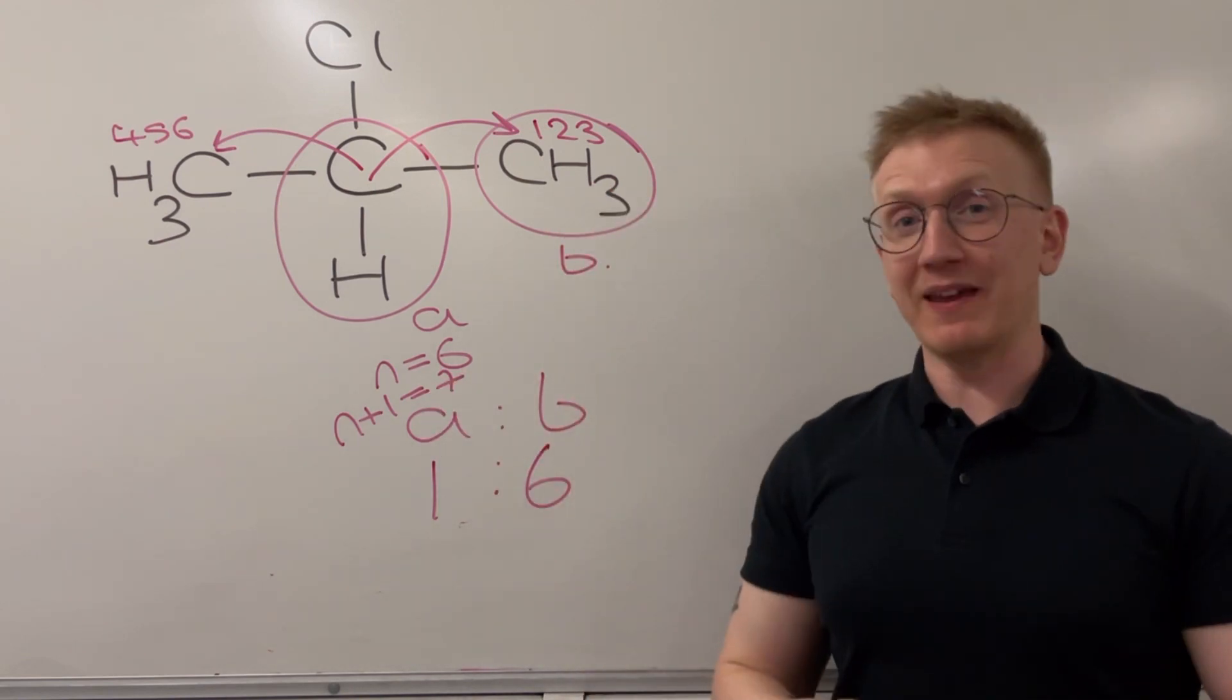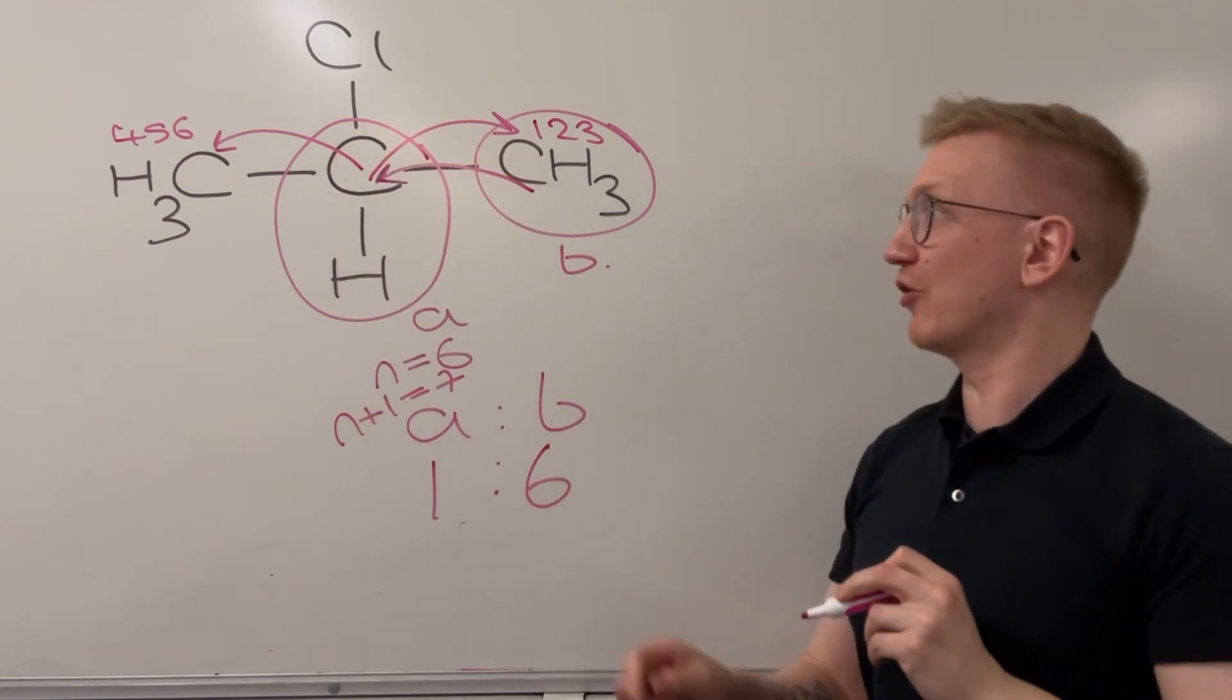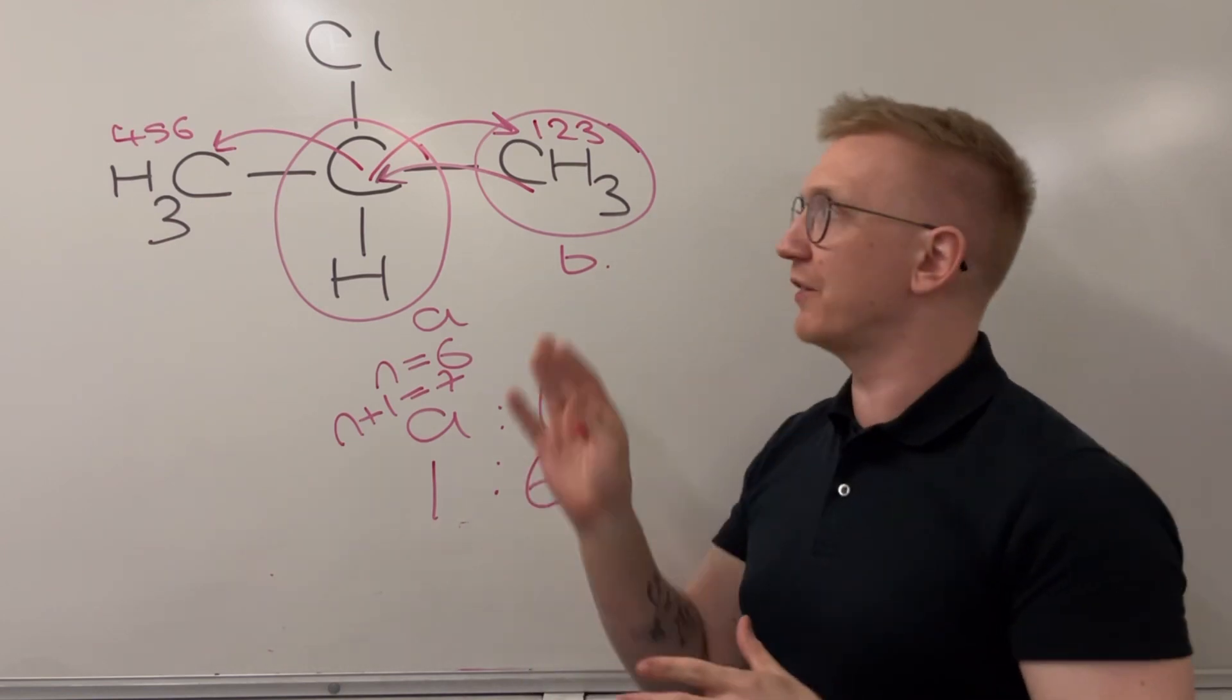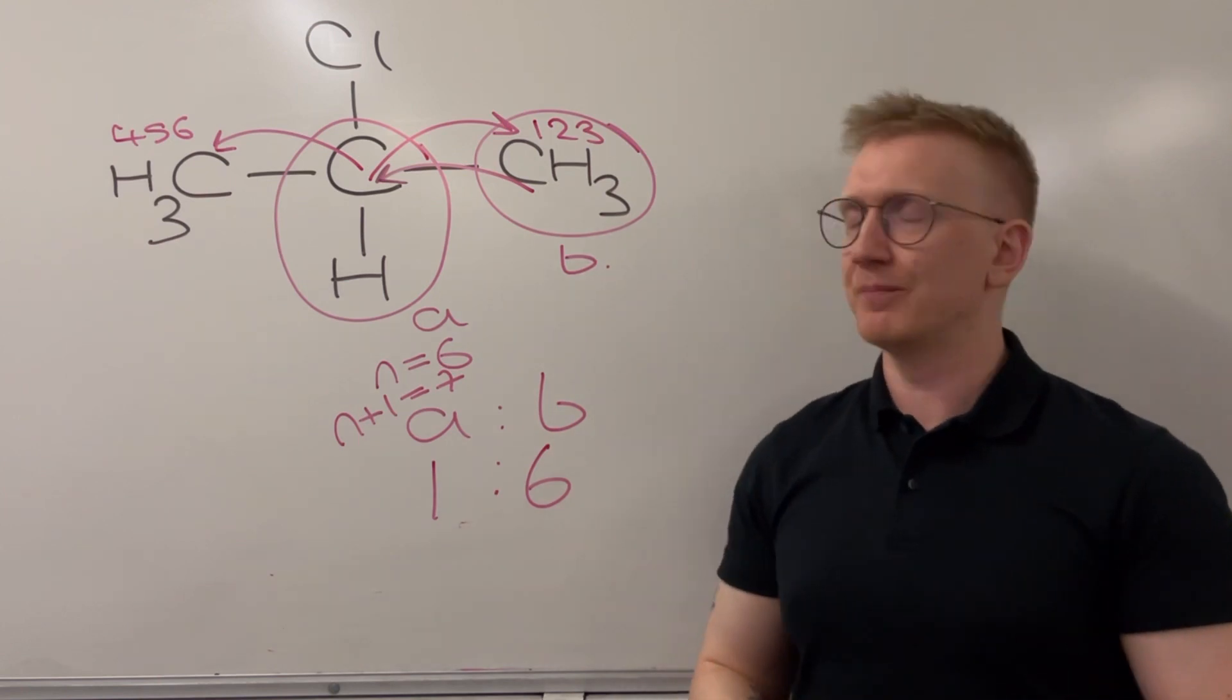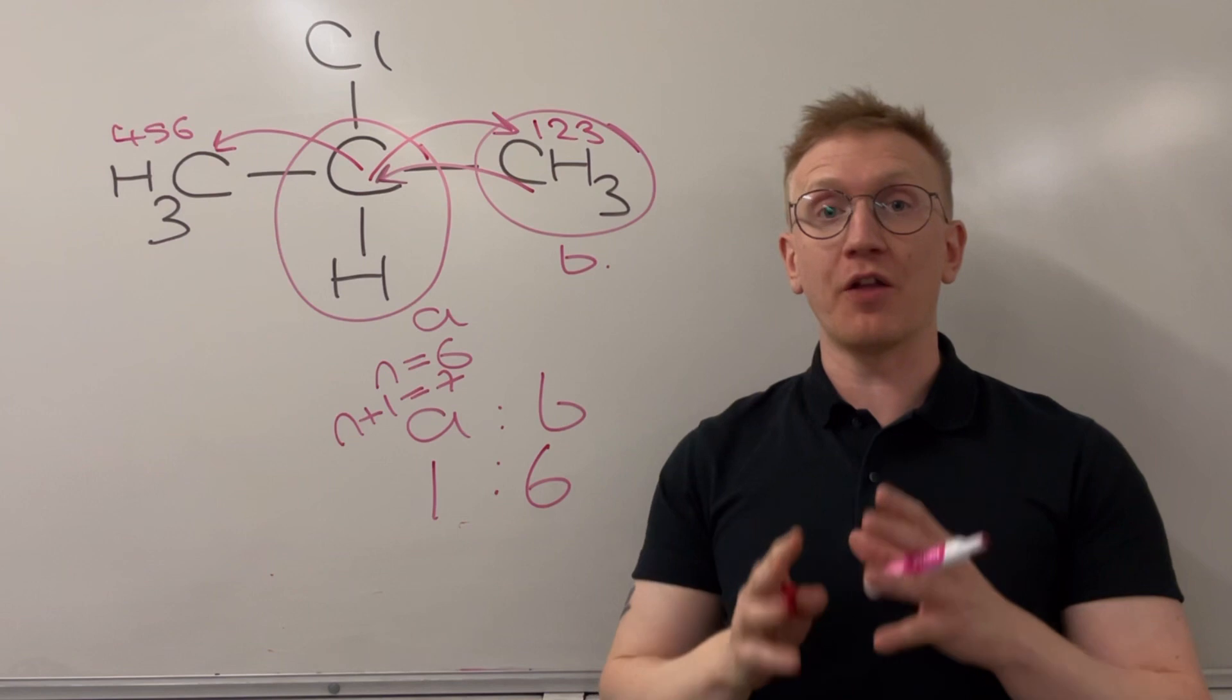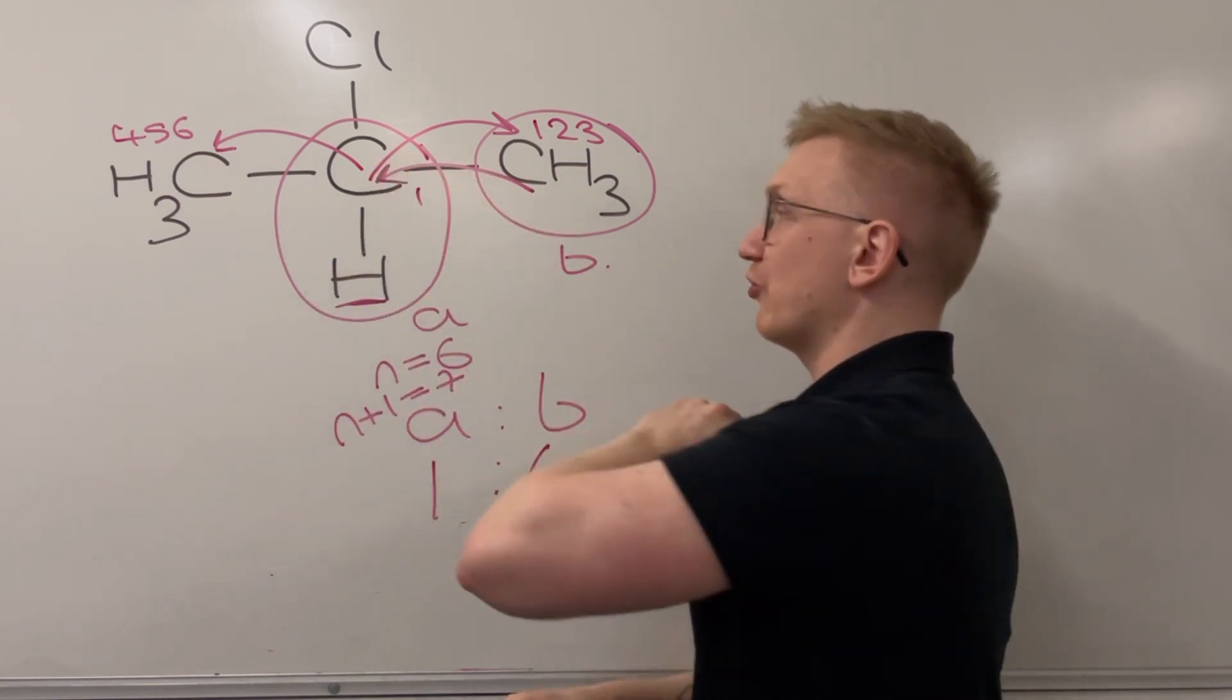What about environment B? Well, going from environment B, I can only go to this environment just here. I don't start from both of them and then work in and do like a total of that. I just go from one of these equivalent CH3 environments. So I'm going to stick with the one I've circled up. When I go to this next carbon just here, the immediate hydrogens on that environment is just one. We've got just this one just here. So it's just a one count.